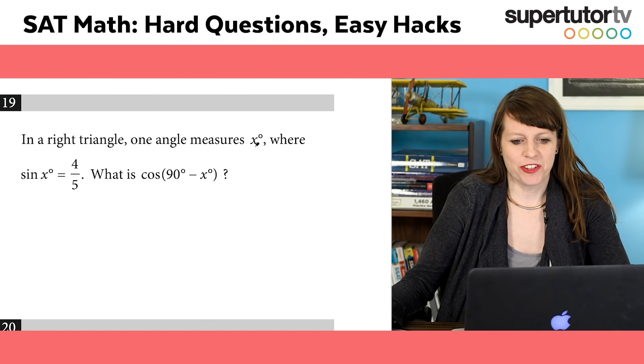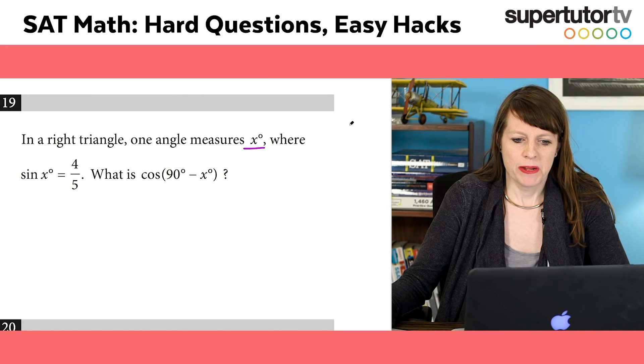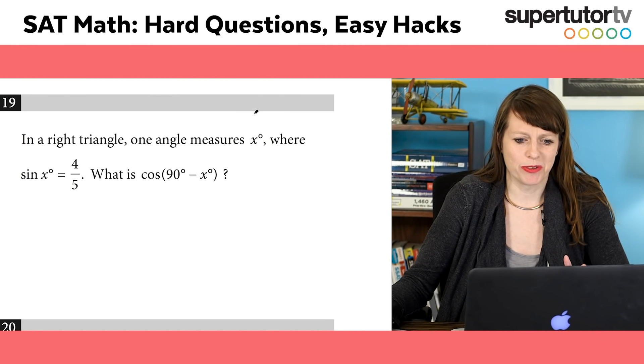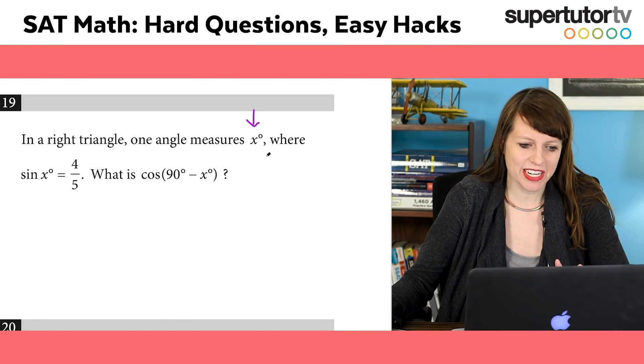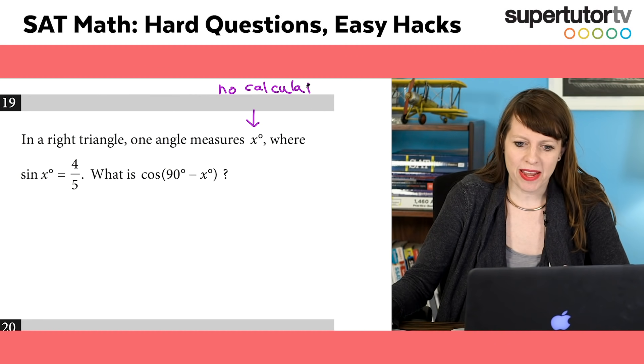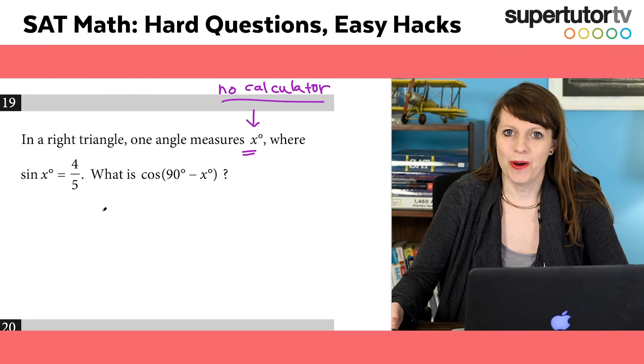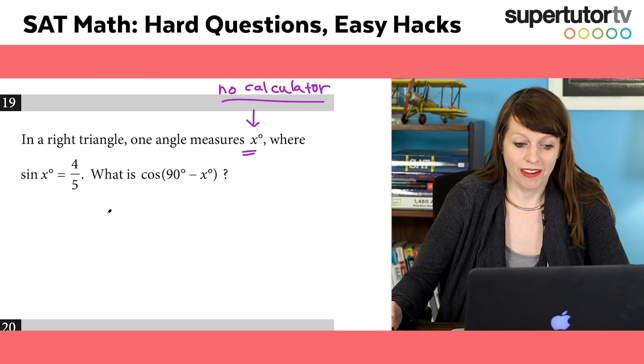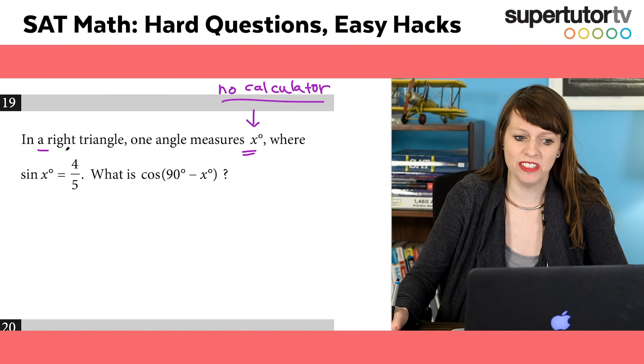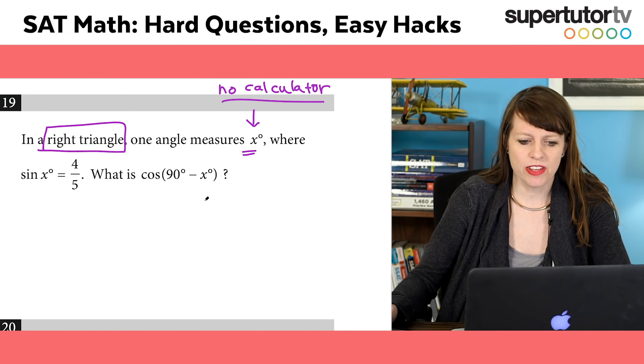In a right triangle, one angle measures x degrees, where sine of x is 4 over 5. What is cosine of 90 minus x? A lot of people see this and they're like, not only do I have to run some sort of trigonometry because I don't know what x degrees is, but I'm in the no calculator section. So I can't just crutch on my calculator and make my calculator tell me what angle this should be by doing arc sine or something. So how do we do this? This is crazy.